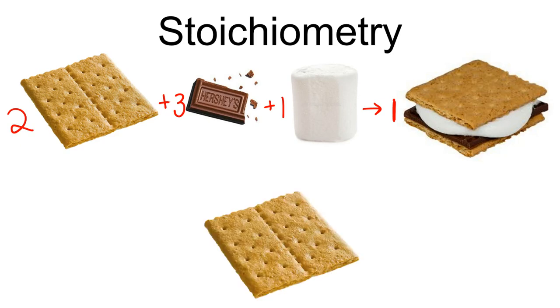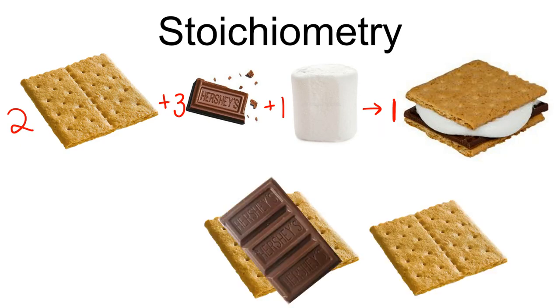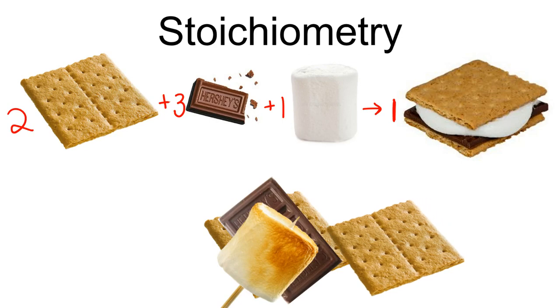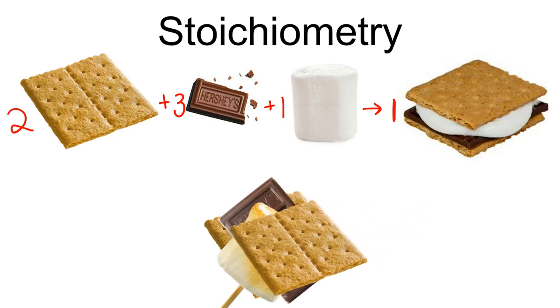So what does that look like? Start with a graham cracker, put on those three squares of chocolate, a marshmallow roasted to perfection, and utilize that top graham cracker to get that marshmallow off your s'more stick and enjoy.